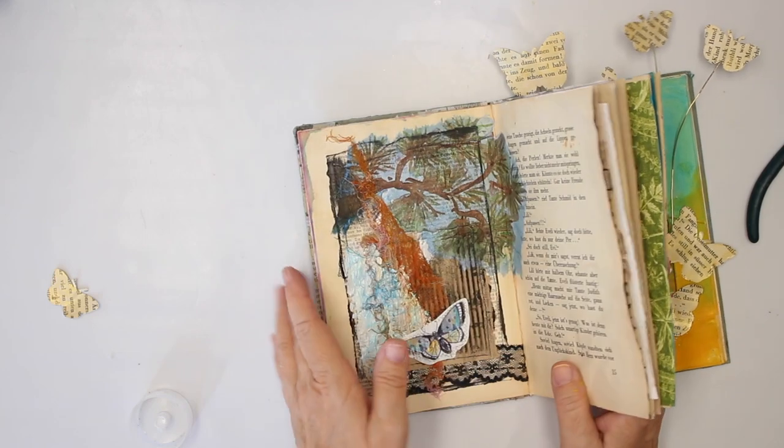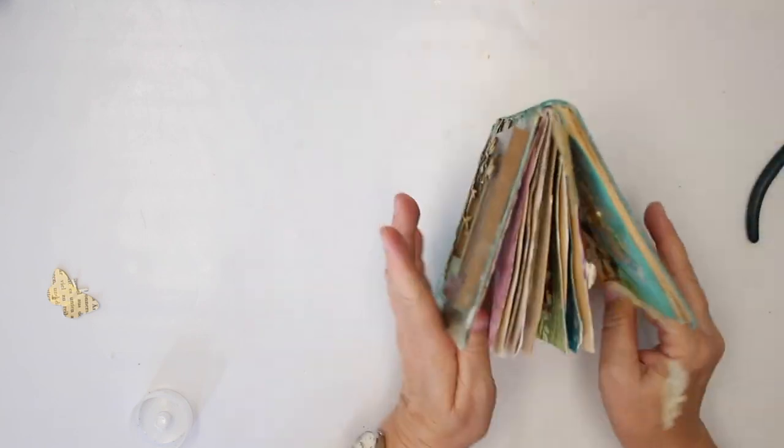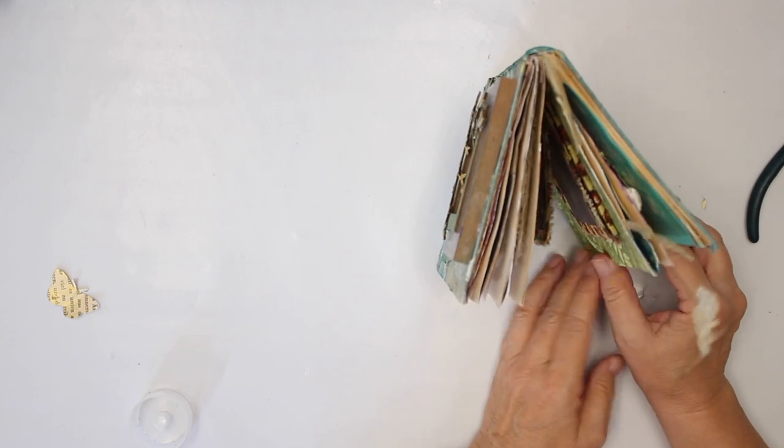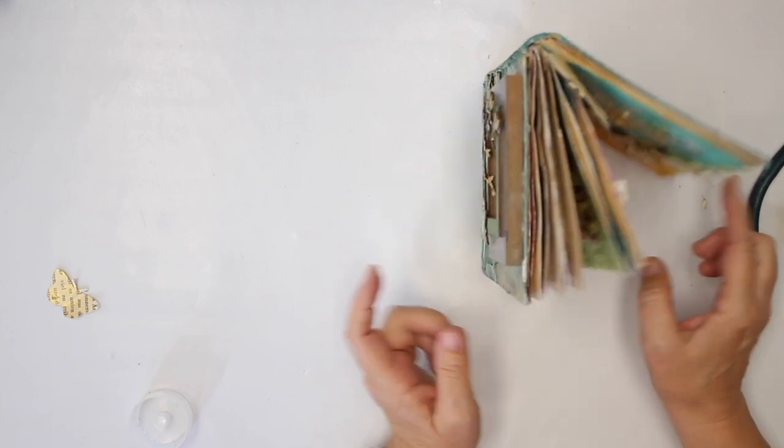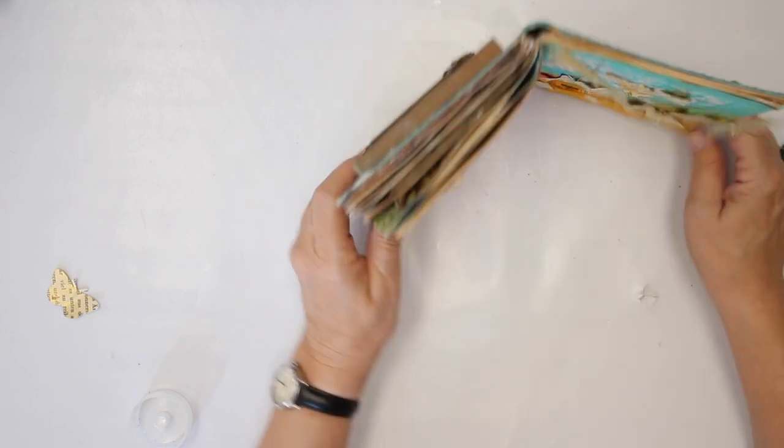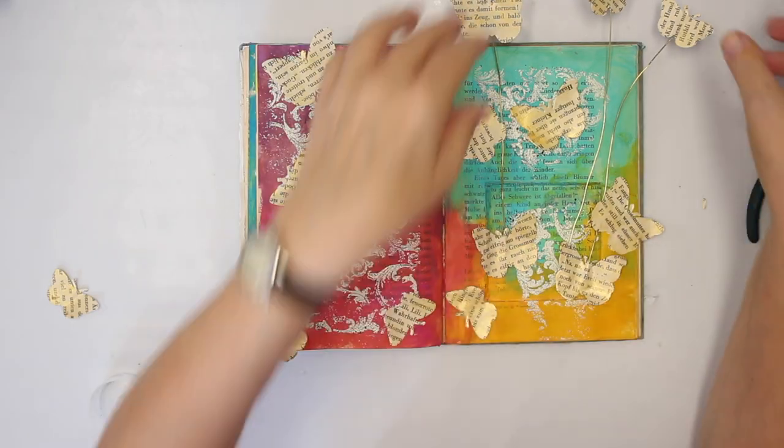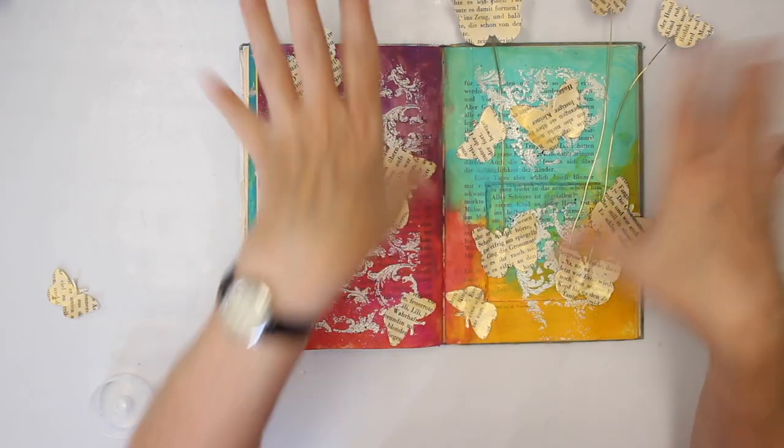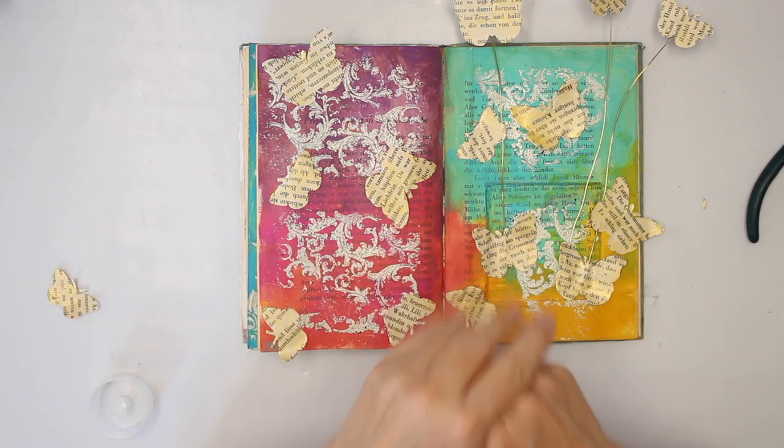I'm gonna cut back some of the pages, but I'm pretty sure it's gonna end up like this, which I don't care. So that's what we have, a double spread full of butterflies flying off the pages.